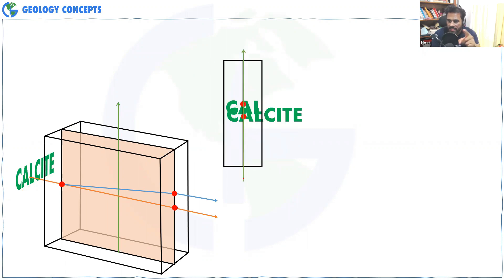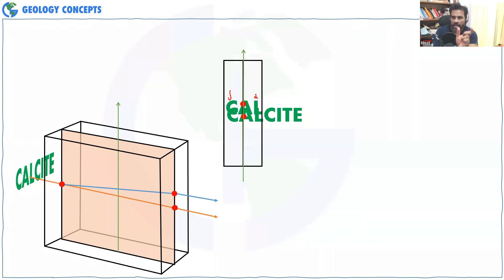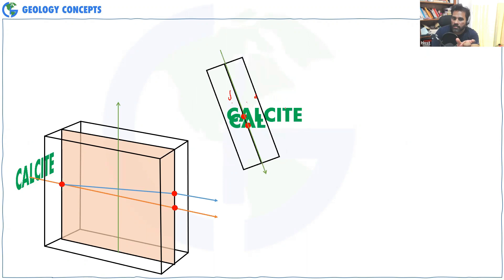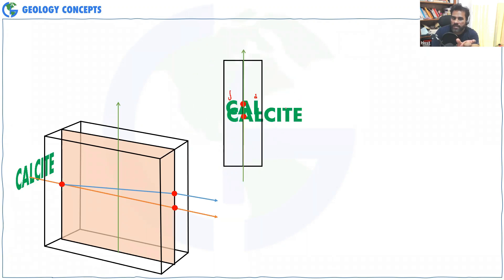See the animation — the calcite text is rotating completely around because this 'cal' is the light coming from the extraordinary ray. If the extraordinary ray is rotating, then the 'cal' image that you see is also rotating. I hope this makes sense.